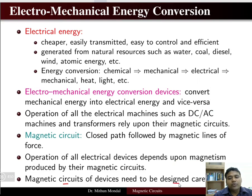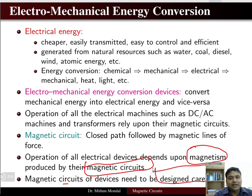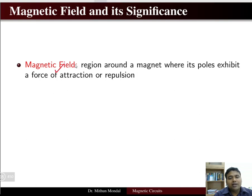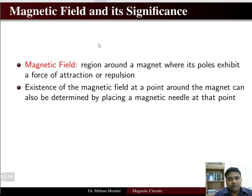Magnetic circuits of devices need to be carefully designed. Since magnetism is the fundamental behind the operation of any device and it depends on the magnetic circuit, it has to be carefully designed so that proper operation of the machine can take place. The magnetic field is a region around a magnet where it exhibits a force of attraction or repulsion. The existence of the magnetic field at a point around a magnet can be determined by placing a magnetic needle at that point.